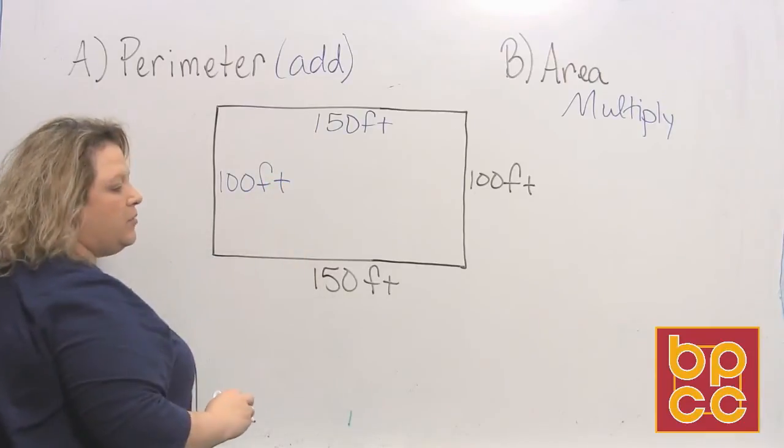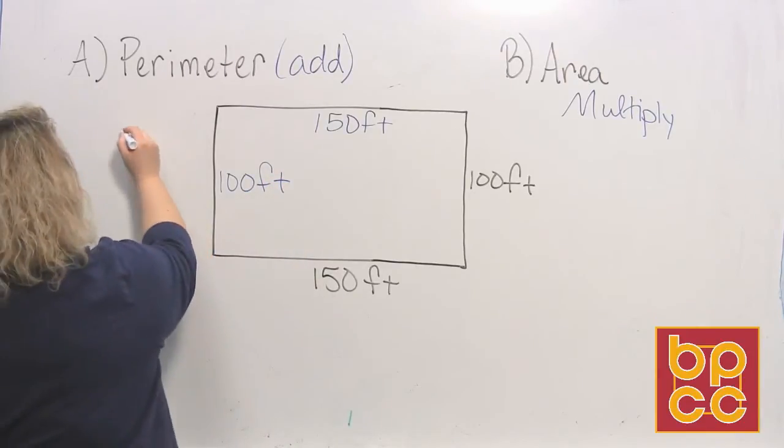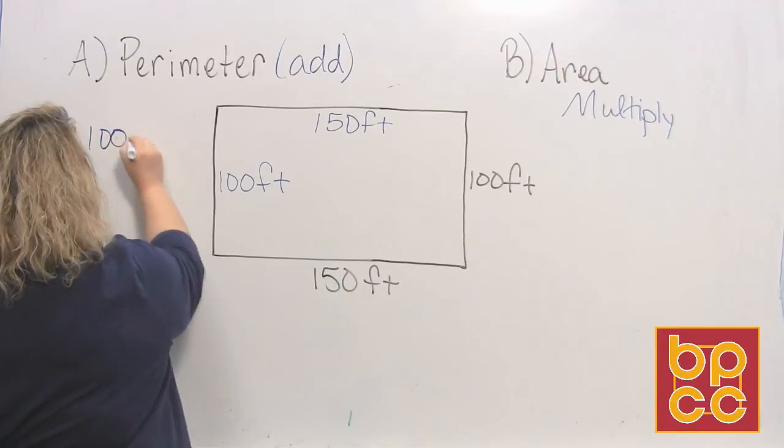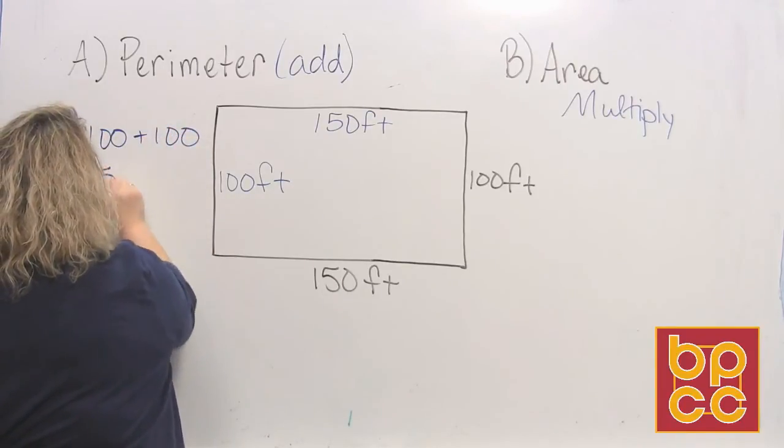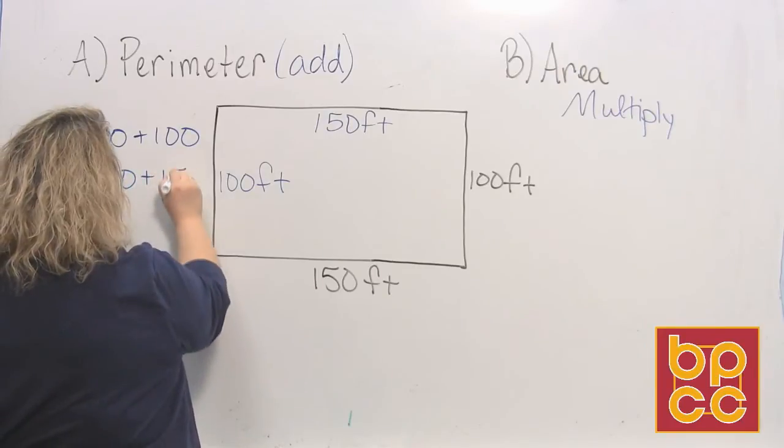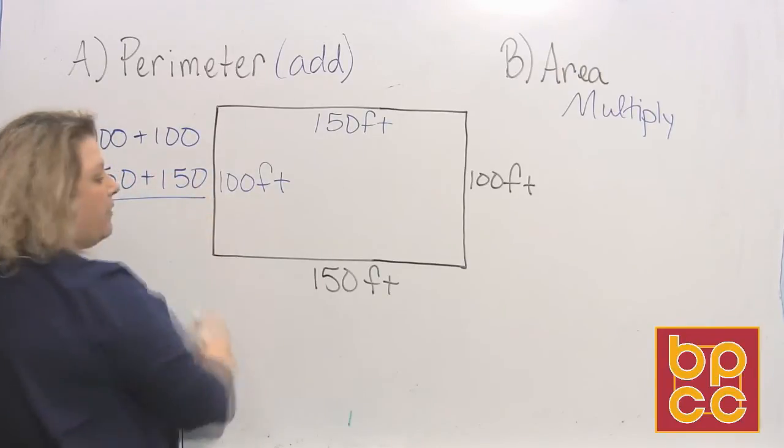And then to do perimeter, all you do is add the four sides together. So that would be 100 plus 100 plus 150 plus 150. And when you add those together, you get 300 plus 200,